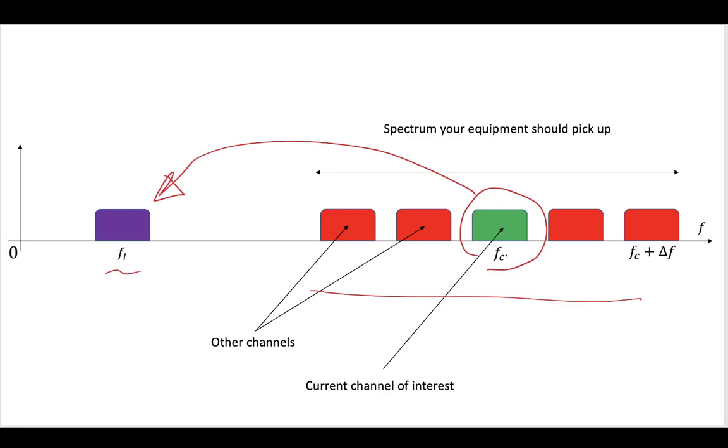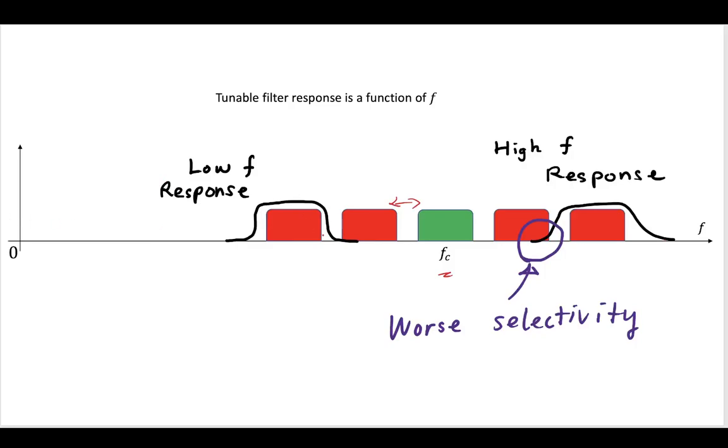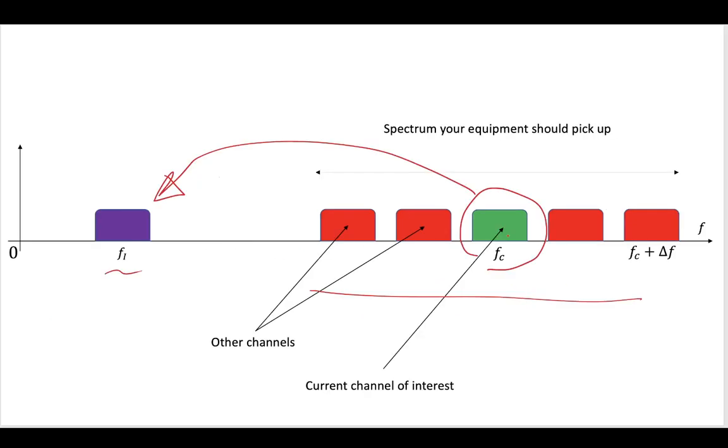And not only that, the tunable filter, as we mentioned, may have different responses over various frequency ranges. You may have a better response at the low frequency compared to the high frequency. However, if you take each one of these channels and were to move it down to an intermediate frequency, we no longer need a tunable filter. We just need one filter that works at that intermediate frequency.